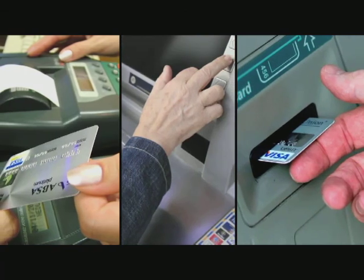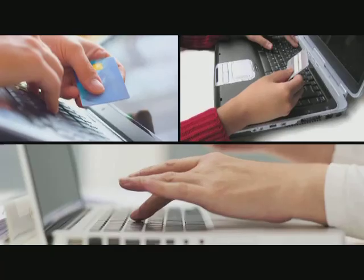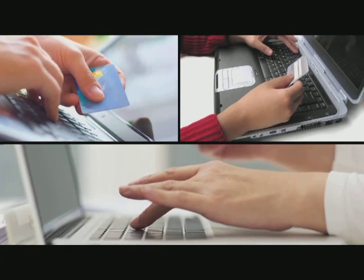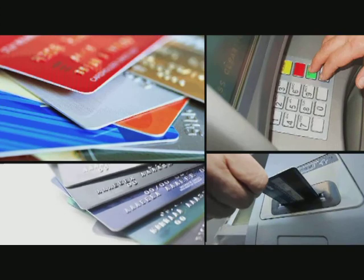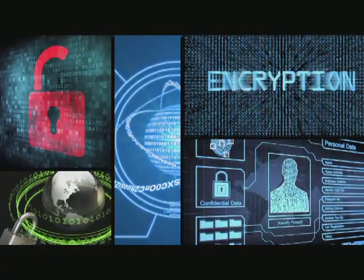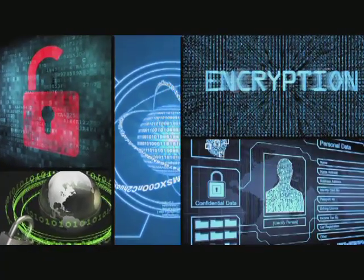Every time you use an ATM or buy something on the internet with your credit card, you use prime numbers to keep your personal information secure. Let me try and explain as simply as possible. It's through a process called encryption.